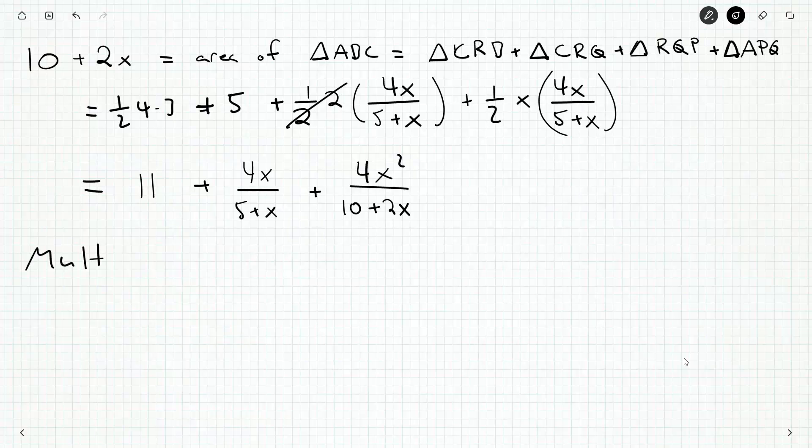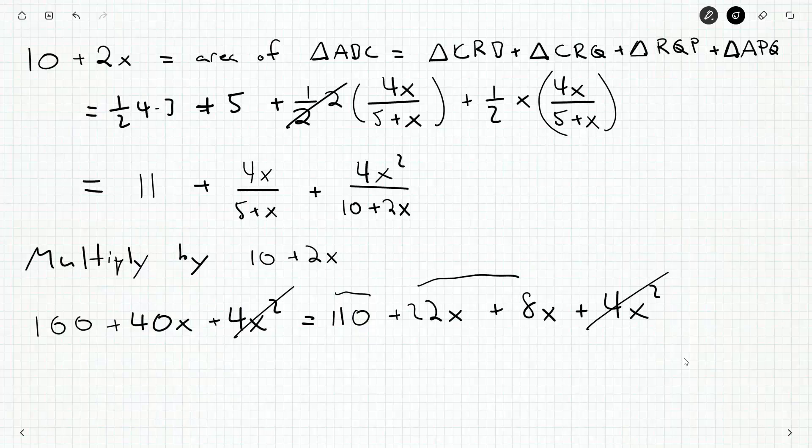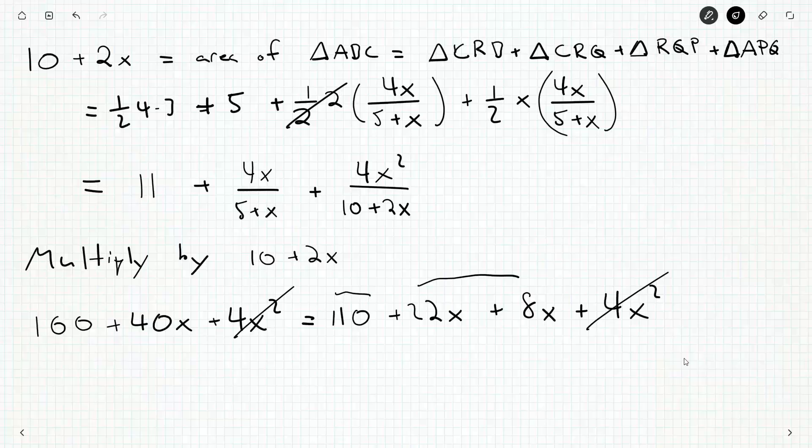Okay, so I've got this height here, and now because I've got the height on the basis, I can get the other two triangles, and now I can break down ABC in two different ways. So we know 10 plus 2X is the area of ABC, but that's also the area of CRB plus the area of CRQ plus the area of RQP plus the area of APQ. And so that's one half four times three plus five plus one half two times this height that we have here, so that's four X over five plus X, plus one half X four X over five plus X. So six and five, that's 11. The half and the two will cancel out. And then we'll get four X squared up on top here, and two times five plus X is 10 plus 2X. So I'm going to multiply by 10 plus 2X on both sides. I'll get 100 plus 40X plus 4X squared plus 4X squared. Now these 4X squareds are going to cancel. I'll be left with 30X over here and 110 over here. 40X here, so we'll get 110 minus 100 is 10, 40X minus 30X is 10X. And so pretty quickly we get X is one.